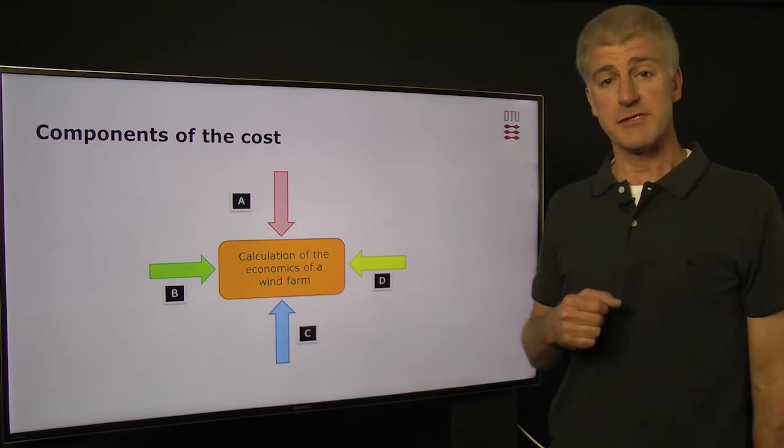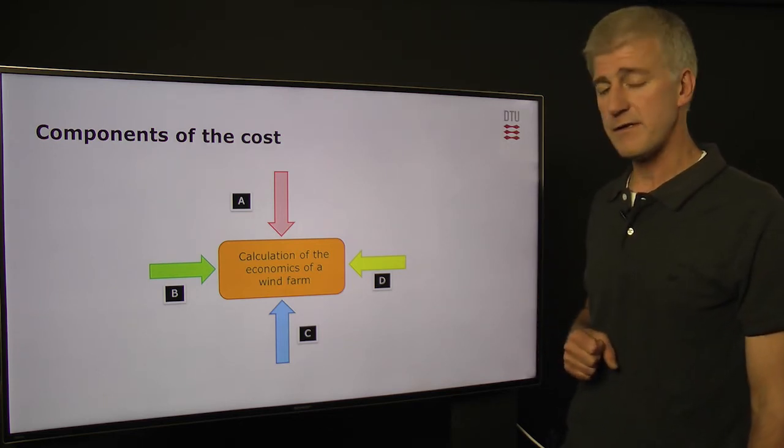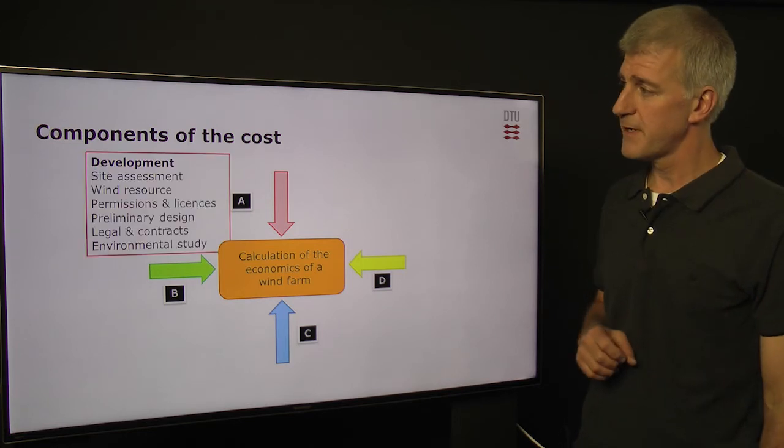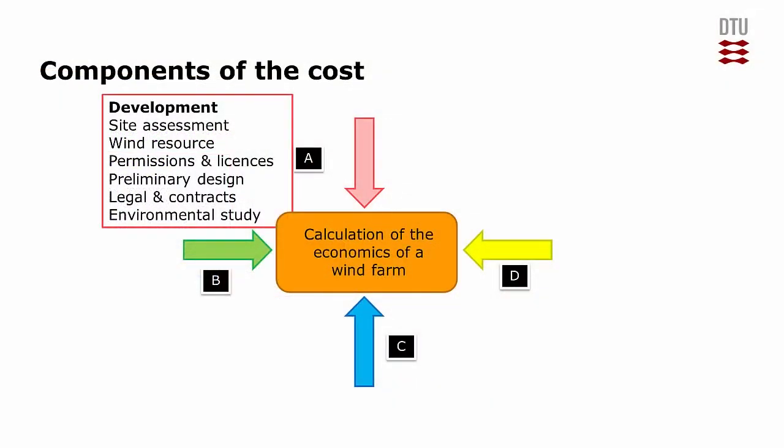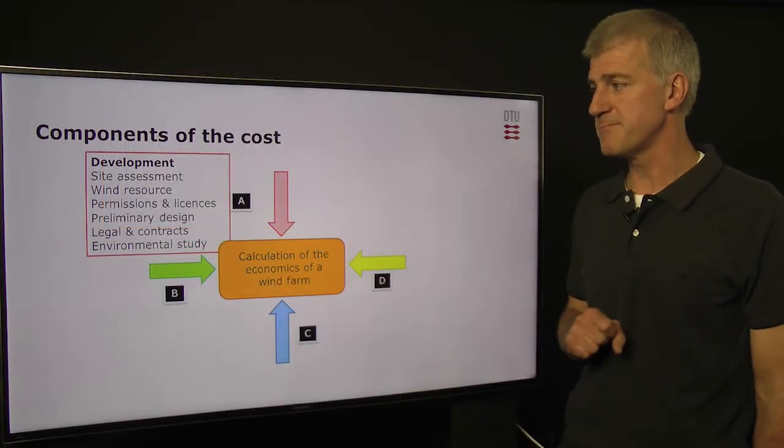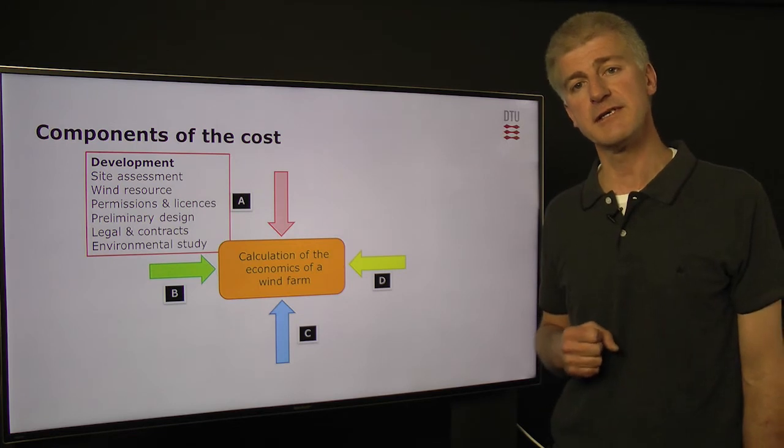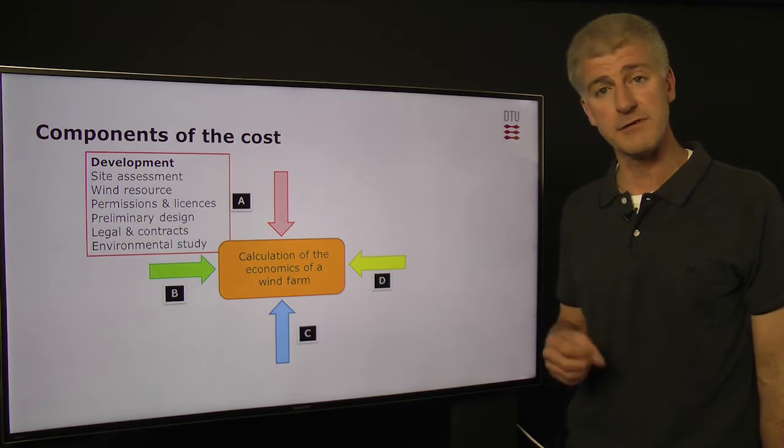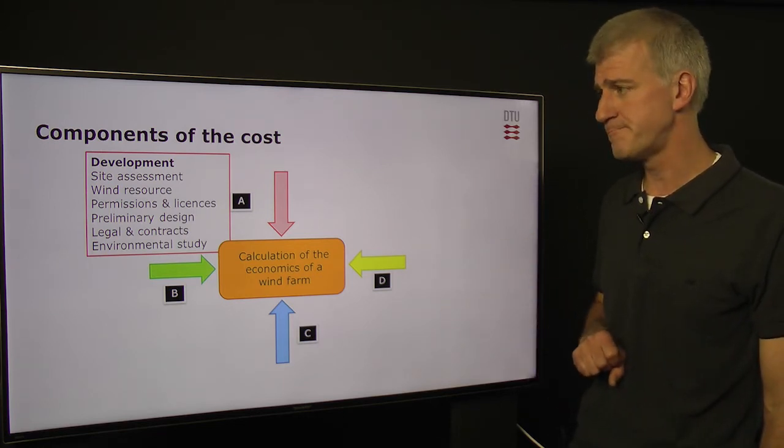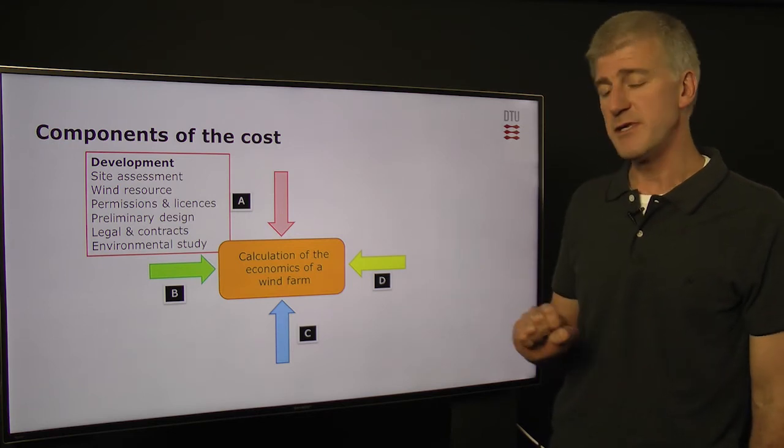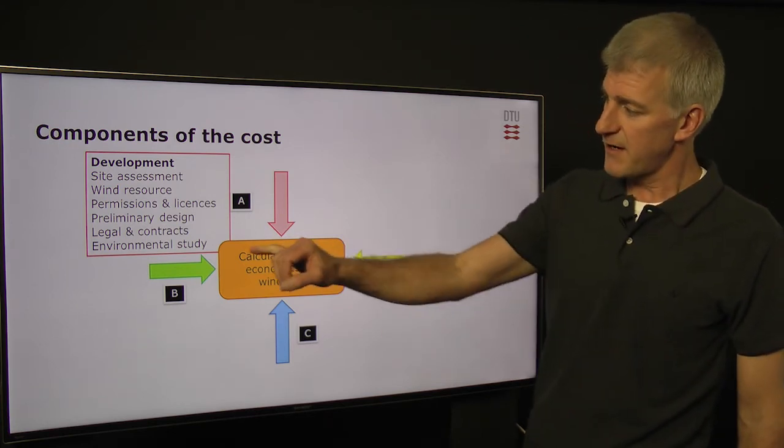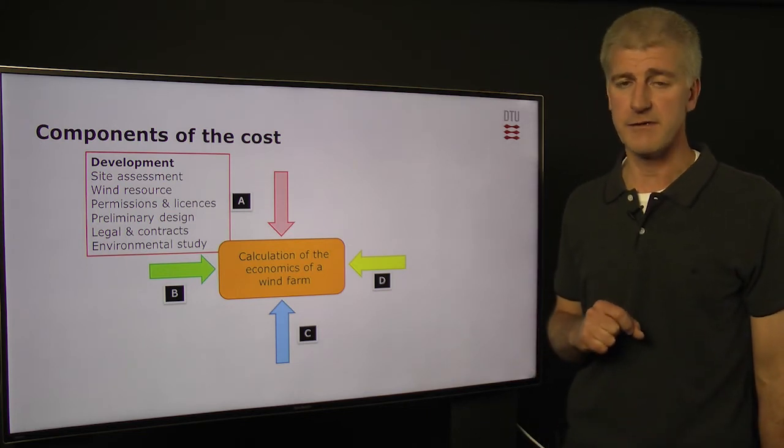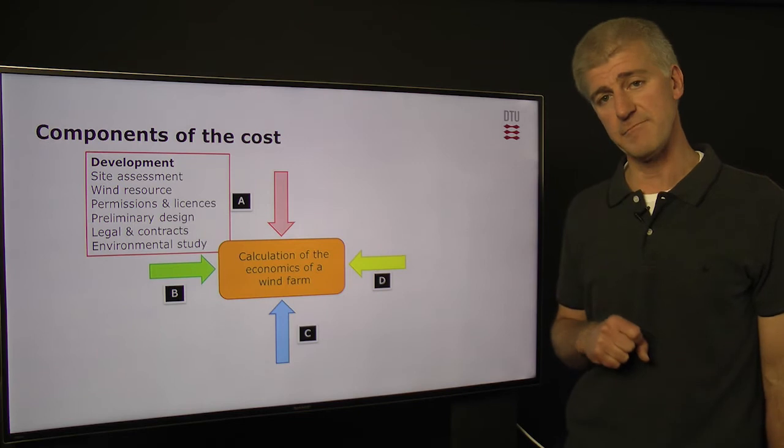So let's look at the individual components of the costs that go into making and operating the wind farm. Firstly, in this development phase, we're going to have to pay out for actually making assessments of the site. We also need to do a wind resource campaign, and we're going to have to get these permissions and licenses. We are most probably going to need some expert advice from outside. It very much depends on the size of your company, whether you can do this in-house or whether you have to hire in. We need to do designs and we need to do the legal framework. And the last here I've put down, which is a very important part of any development phase of a wind farm, and that is the environmental study.